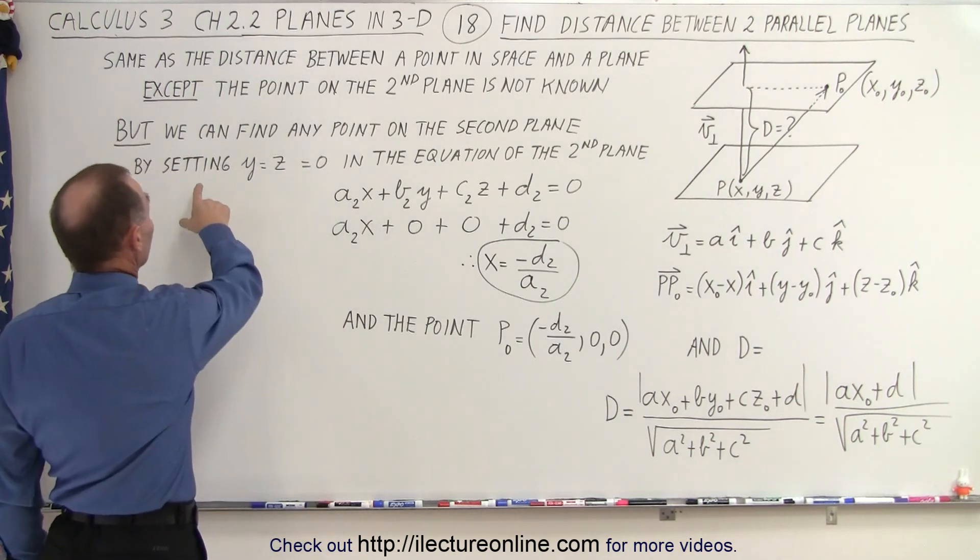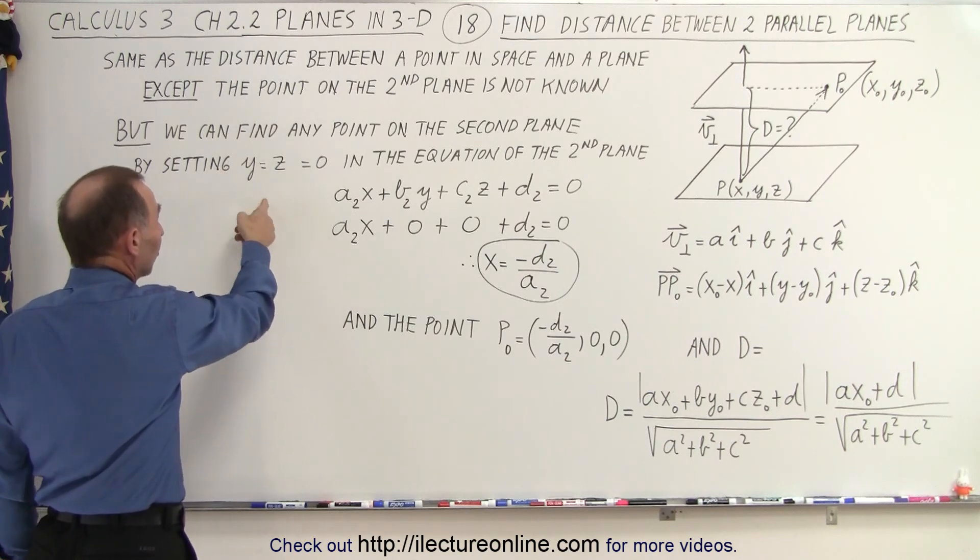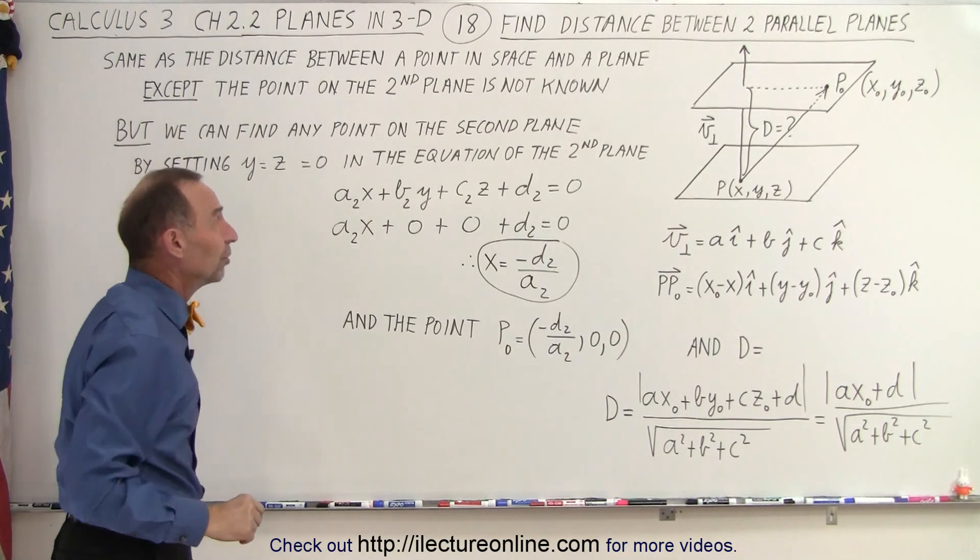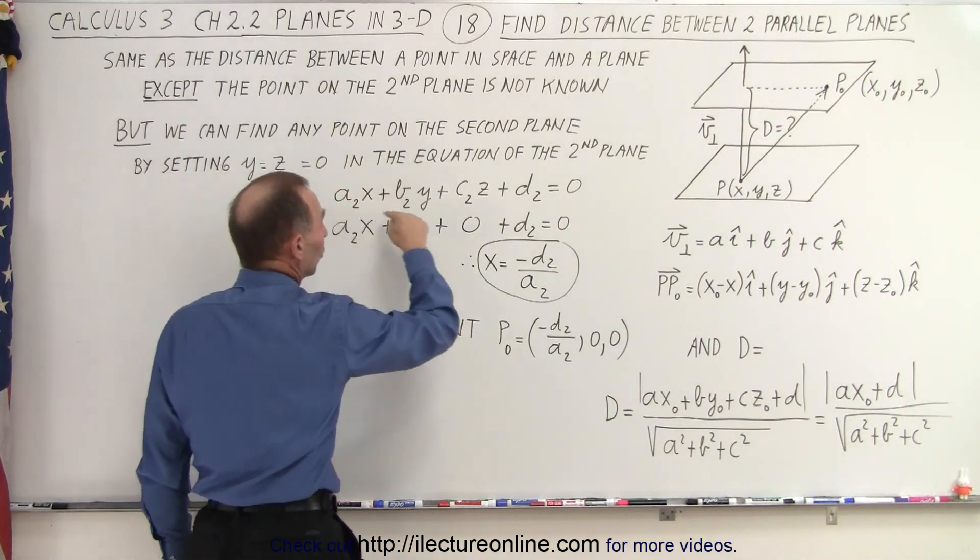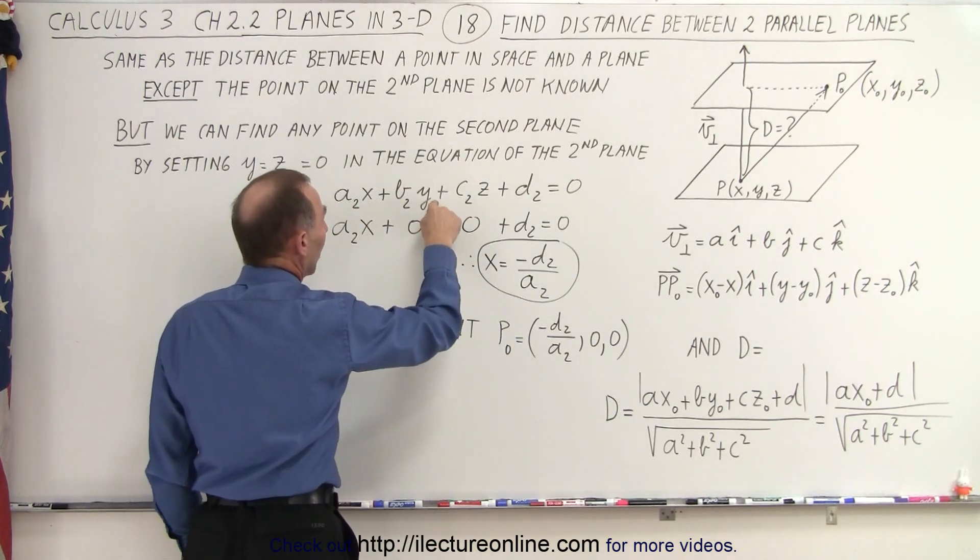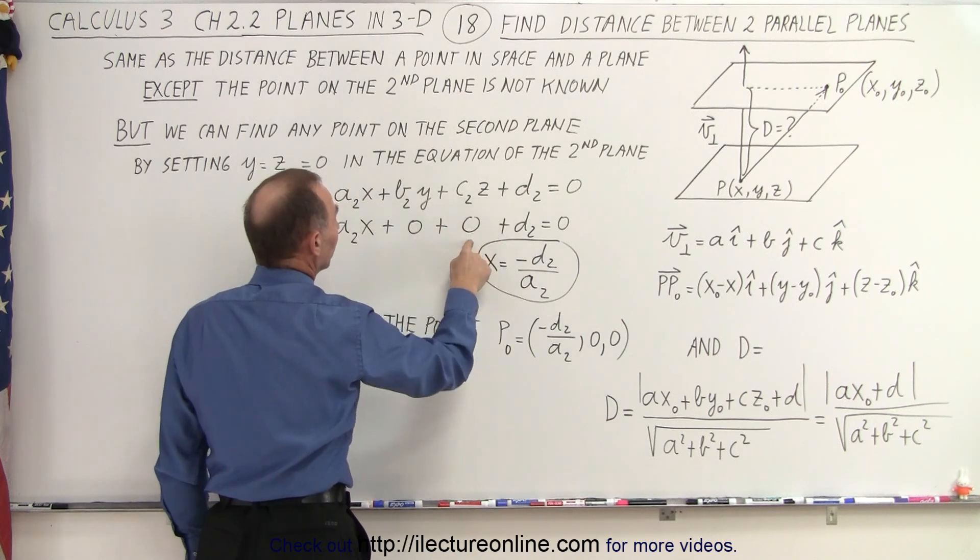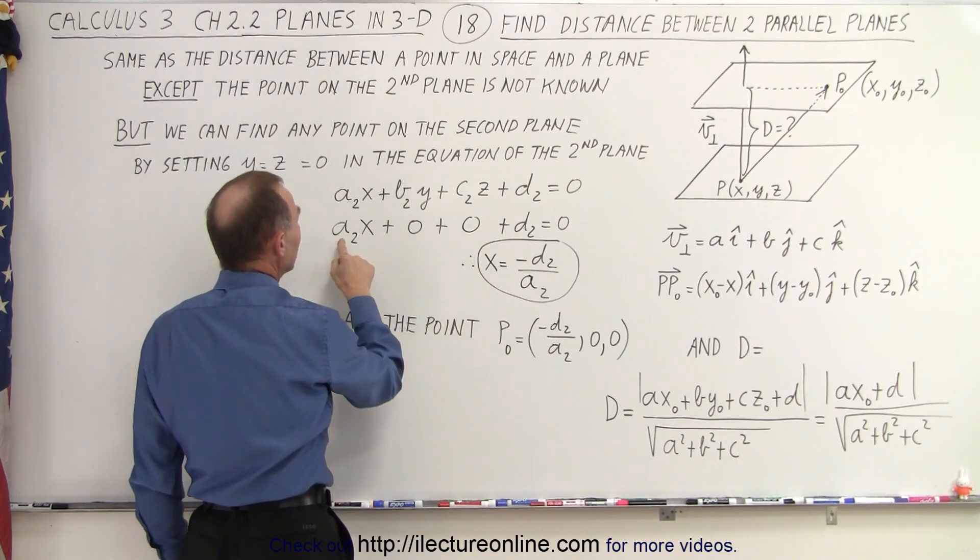We can find any point on the second plane by doing a simple trick. What we're going to do is set two of the three variables, in this case y and z, equal to zero. In the equation of the second plane, when we do that,